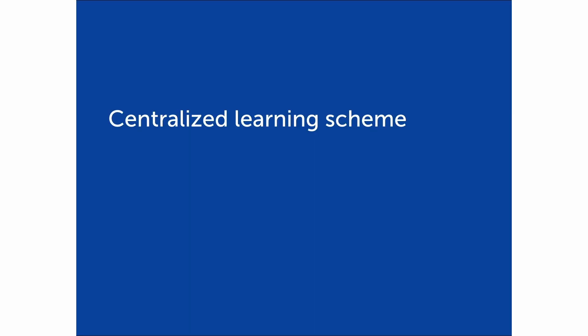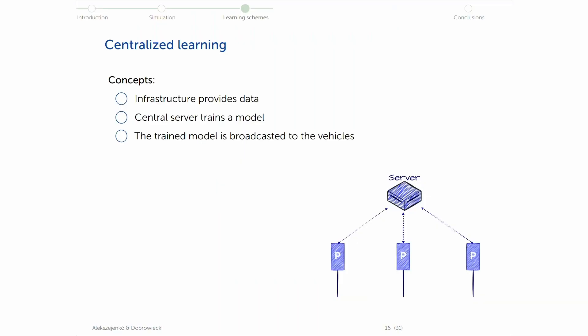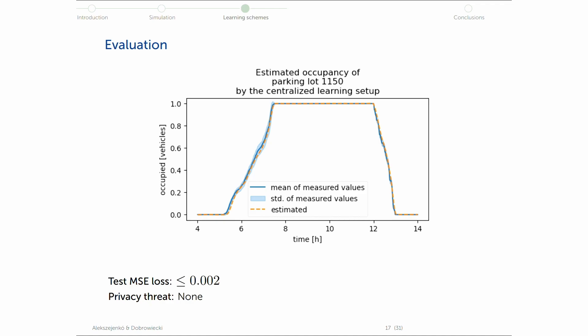So let's see what is the centralized learning scheme. As we already seen, the concept is that the infrastructure itself records the data, sends all of the data to the central server, the central server does the machine learning, and then the results are broadcasted to the vehicles so they can use the results.